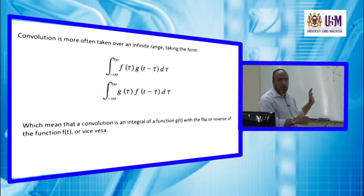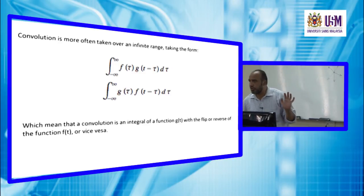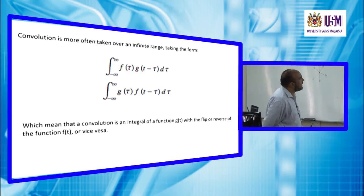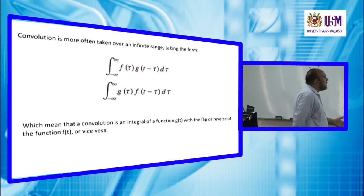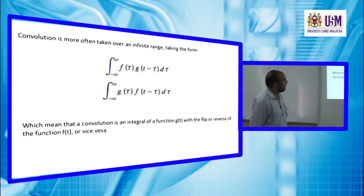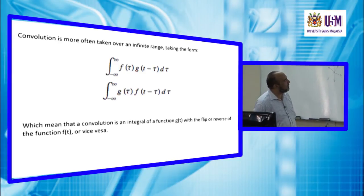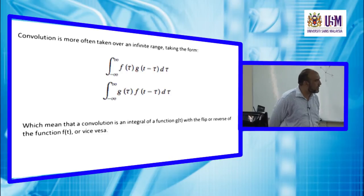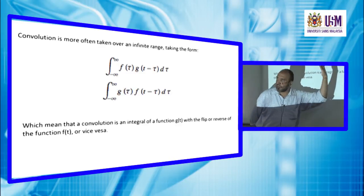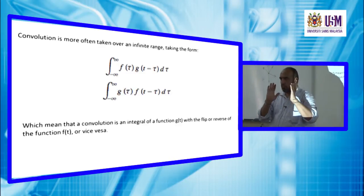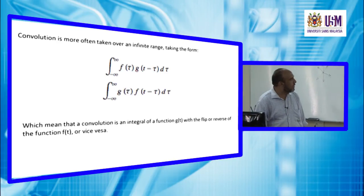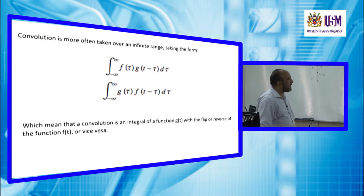The equation above describes finite convolution, but convolution is more often taken over an infinite range from minus infinity to plus infinity. This means convolution is an integral of g(t) with the flipped version of f(t) — like a mirror image of the function.